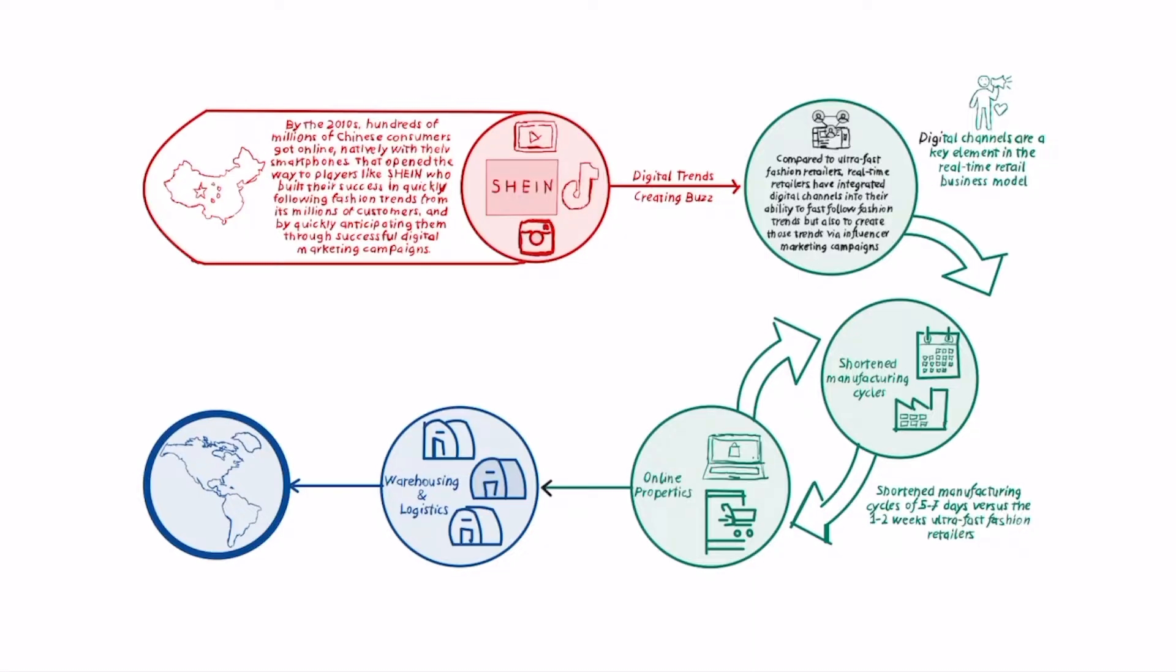This further evolution, which comes especially from a platform from Shein, which is a Chinese platform, is that those digital trends now are getting shipped directly on social media platforms, especially on platforms like TikTok. Compared to the ultra-fashion player where the digital trend is very fast followed, in the real-time retail, the trend is developed on top of the social media platform.